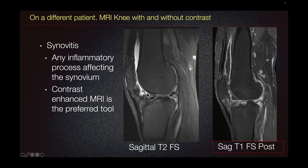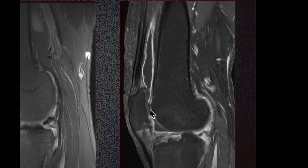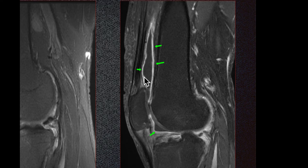Non-contrast imaging is limited, as we cannot completely discern between the synovium and the fluid itself. Contrast-enhanced imaging is therefore the preferred tool for evaluating synovial thickness. The grading system of synovitis is based on the degree of synovial thickening. Here, we can see a large joint effusion with synovial thickening consistent with synovitis.